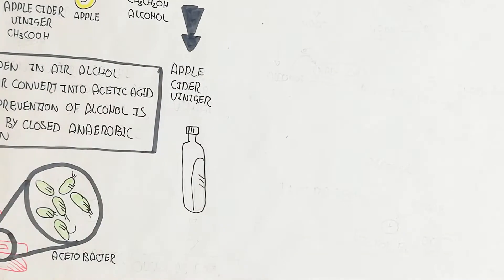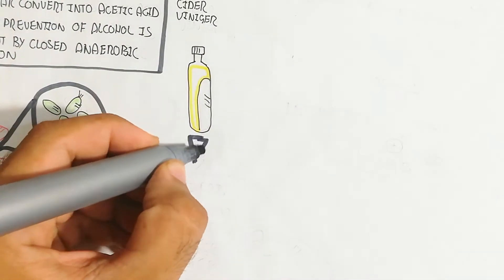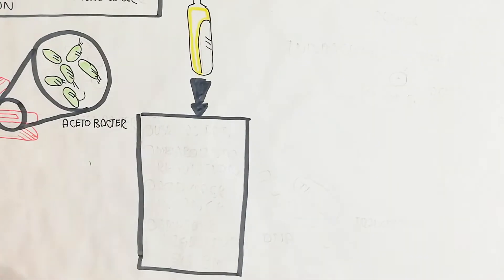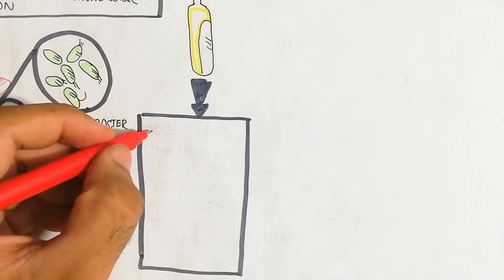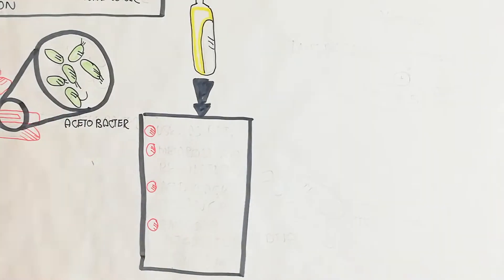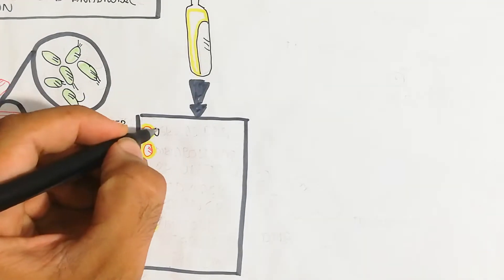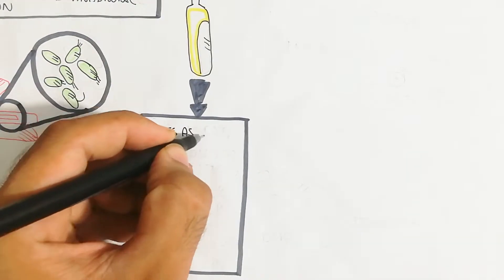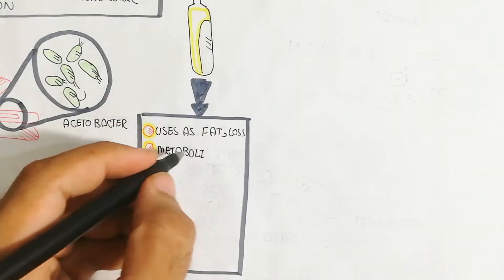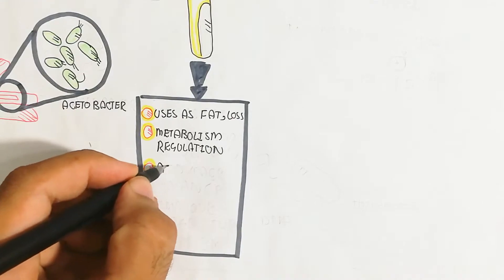When alcohol (CH₃CH₂OH) comes into contact with acetobacter, apple cider vinegar is formed. Alternatively, sugar can also be used as a substrate — acetobacter can convert sugar into acetic acid as well, though in this video we focus on the ethanol pathway.